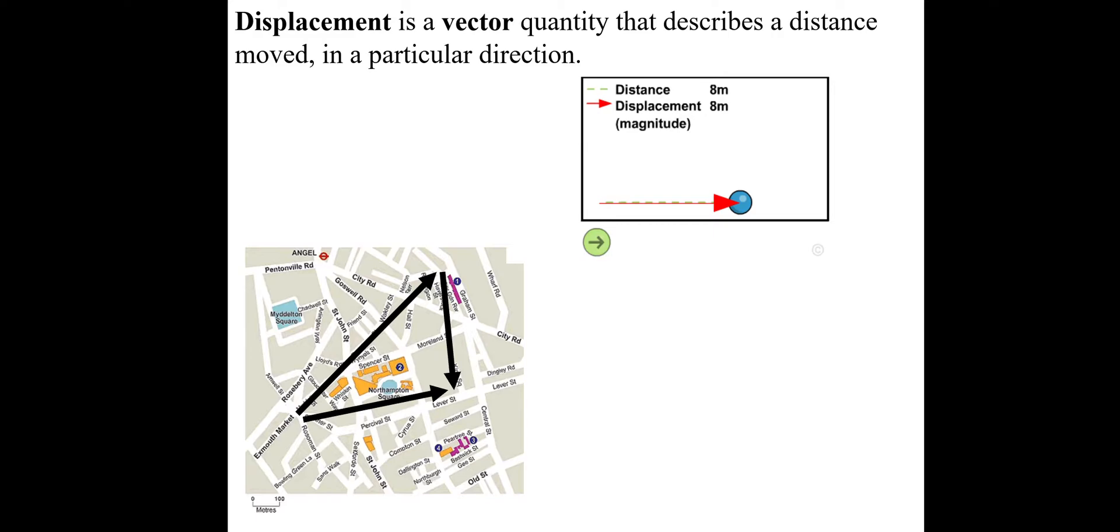Displacement is a vector quantity that describes the distance moved in a particular direction. So let's just look at this one in particular. If I continued this, let's say I took a path like this. The distance traveled may be, I don't know, 25 meters. But what we've done is gone back to our starting position. So the displacement is the distance in a straight line from where you start to where you end. And we've ended up back where we started. So the displacement, s, is actually zero meters in this case. Displacement is a vector quantity.